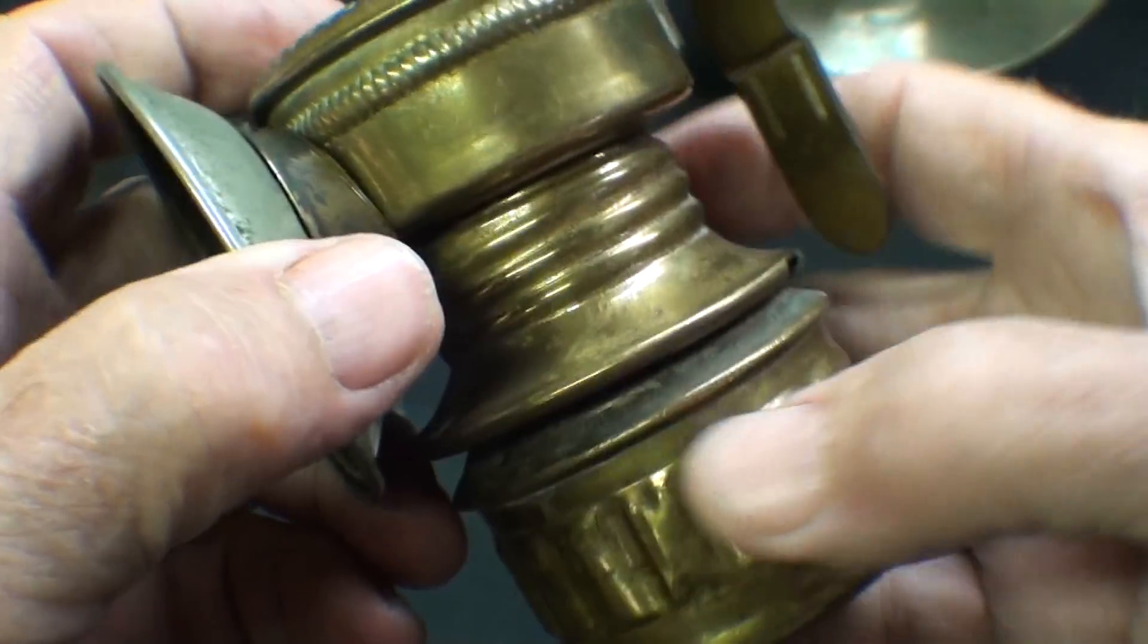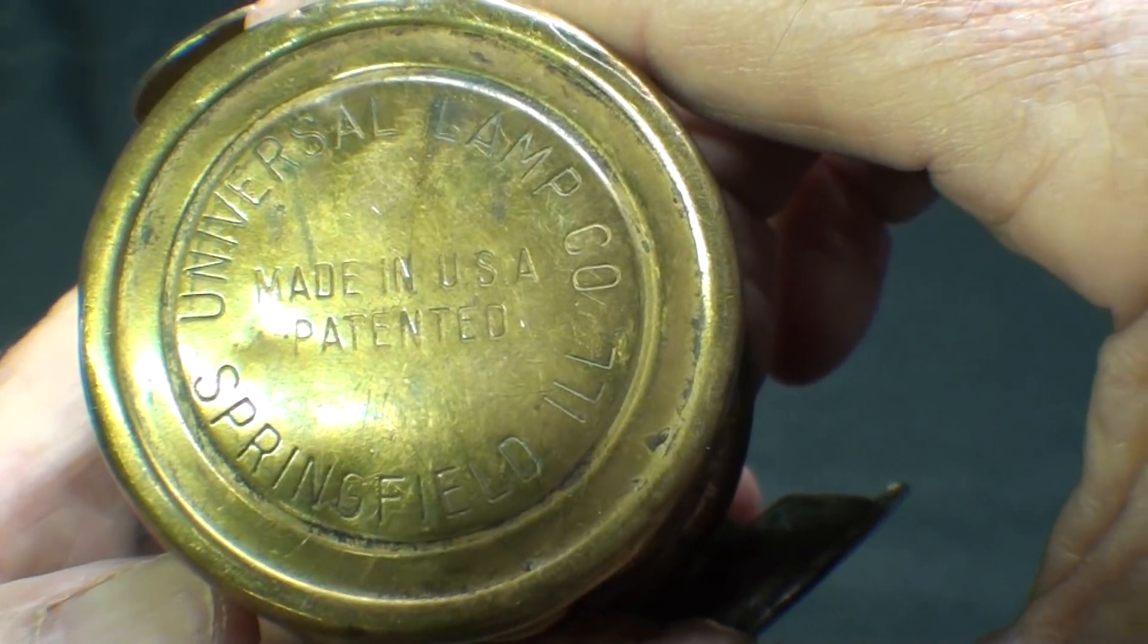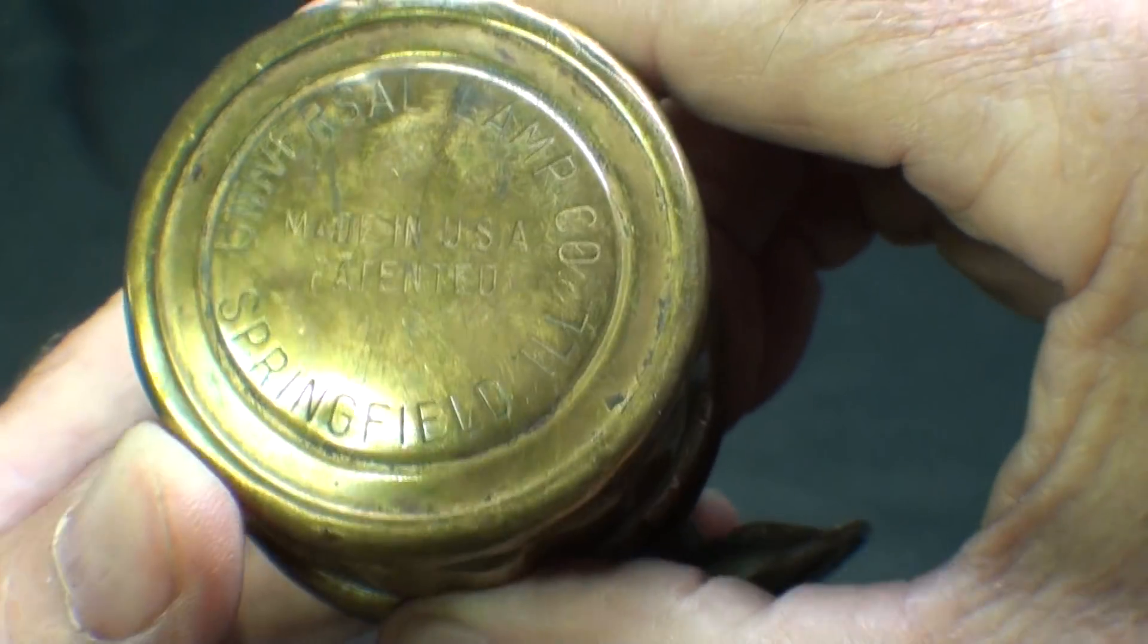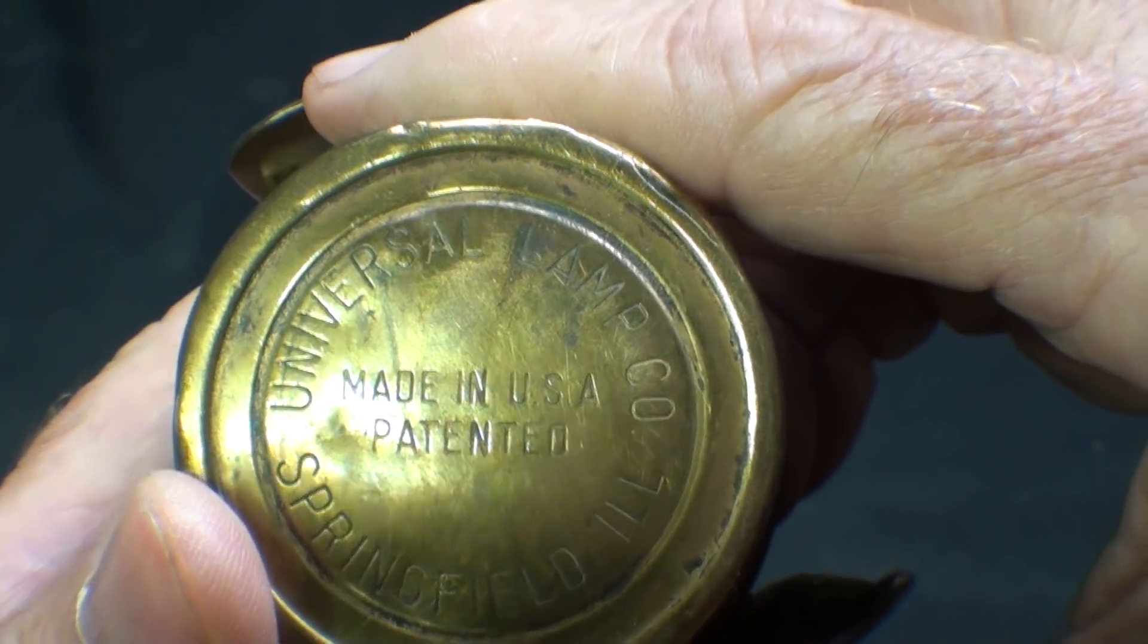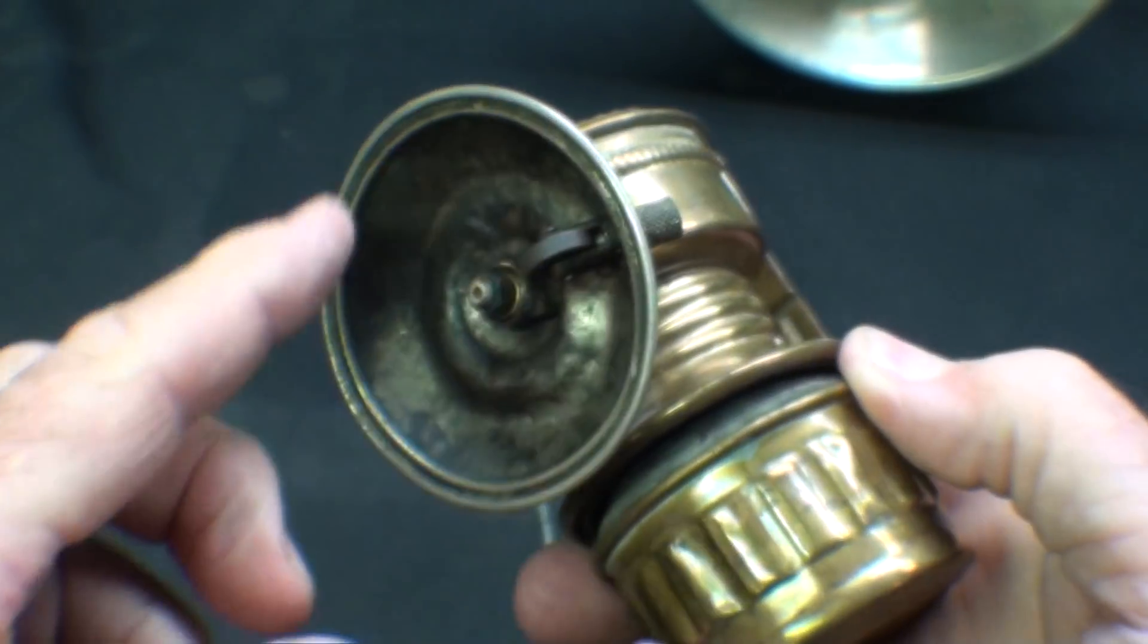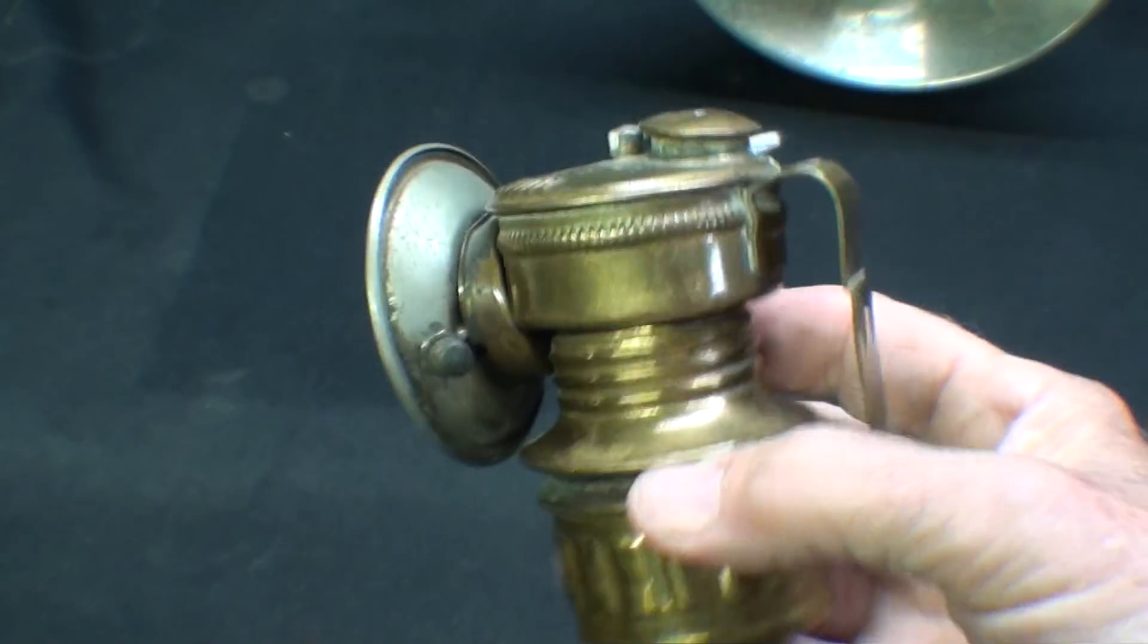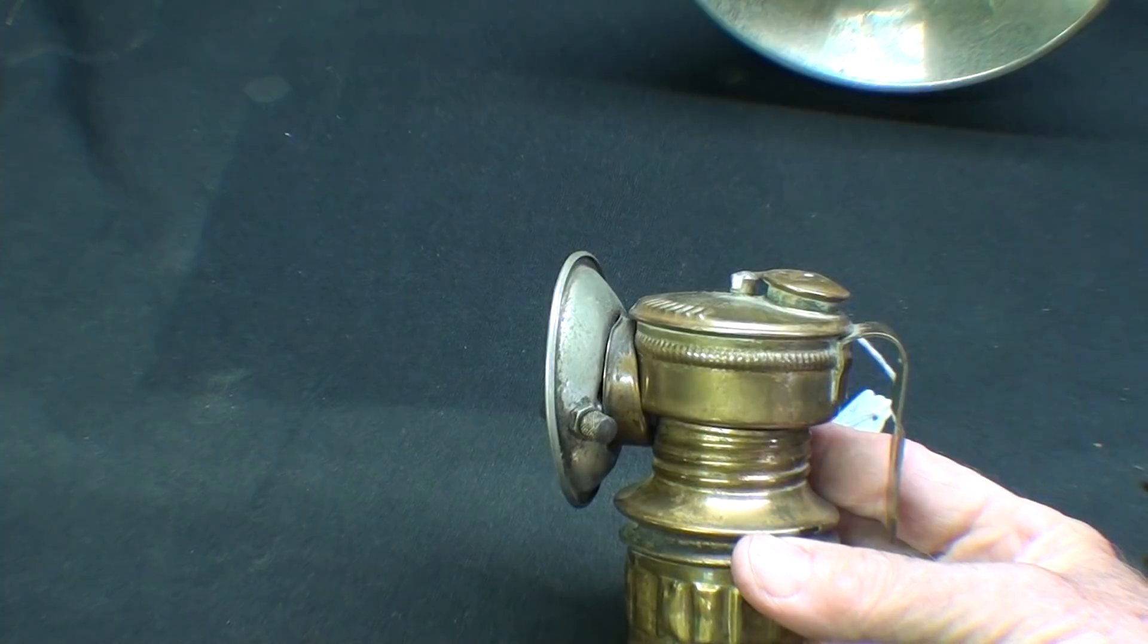This particular one was made by Universal Lamp Company, Springfield, Illinois - just Lincoln's home, 120 miles from me. All brass except for the reflector. I'm going to show you several other kinds before I attempt to start this, but let me talk about carbide first.